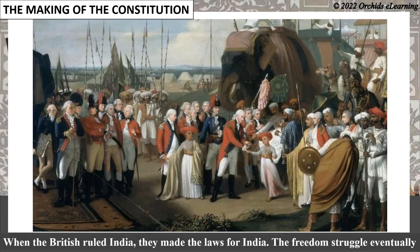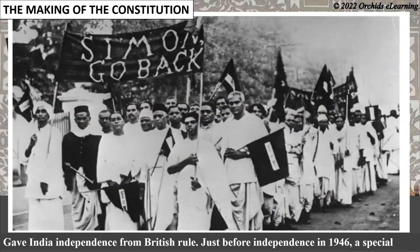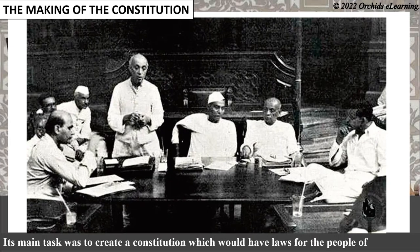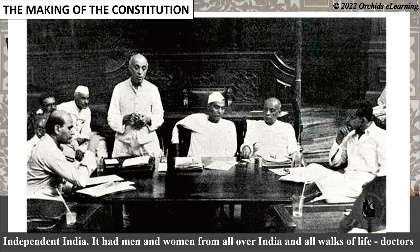When the British ruled India, they made the laws for India. The freedom struggle eventually gave India independence from British rule. Just before independence in 1946, a special assembly called the Constituent Assembly was formed. Its main task was to create a constitution which would have laws for the people of independent India.